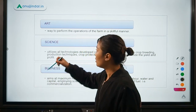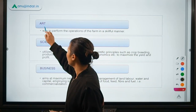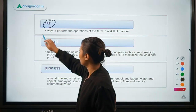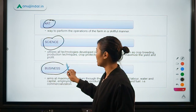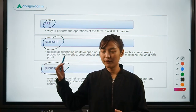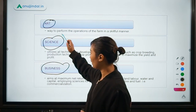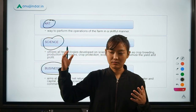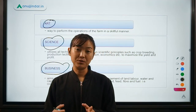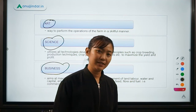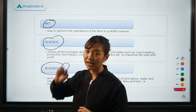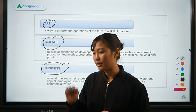Agriculture is also related to art, science, and business. It is related to art because, just as an artist needs skills, in the same way, to do all the operations and activities in agriculture, you need to be skilled. You need all the skills to conduct these activities — and that is why agriculture is considered an art.